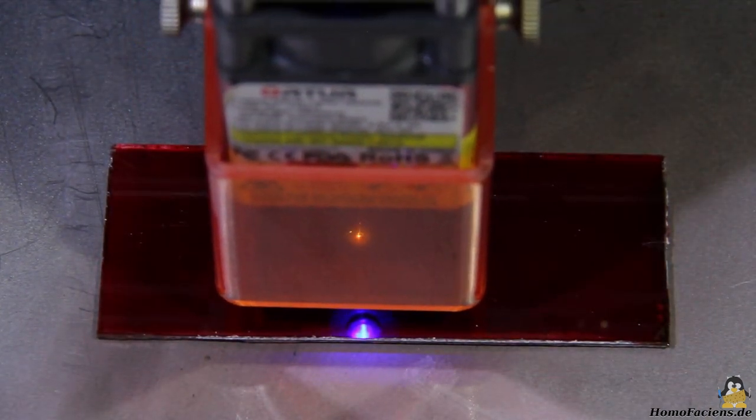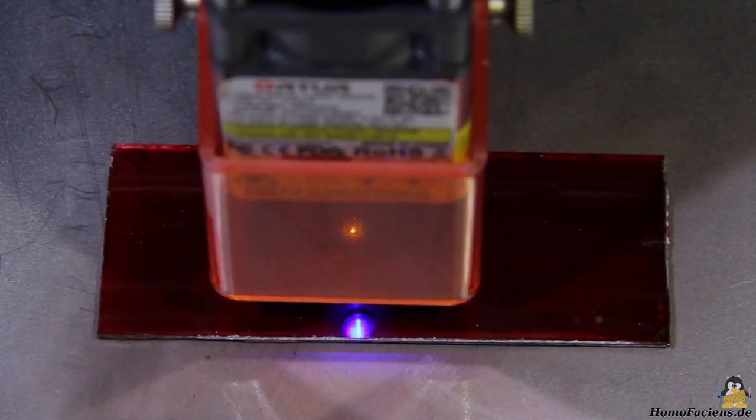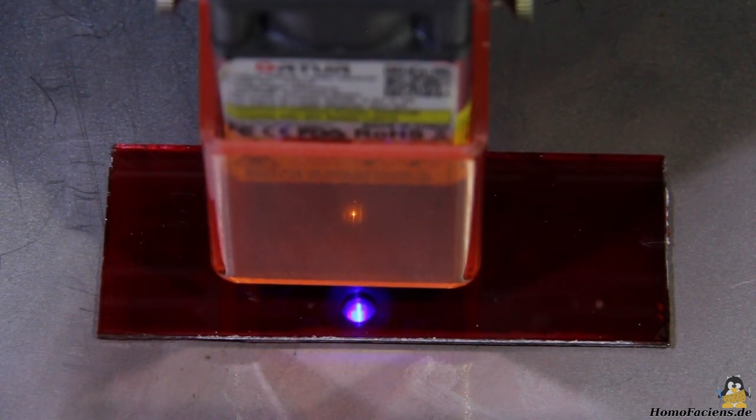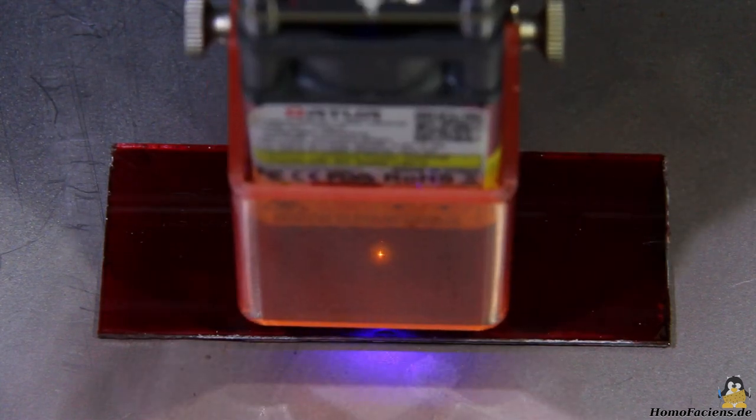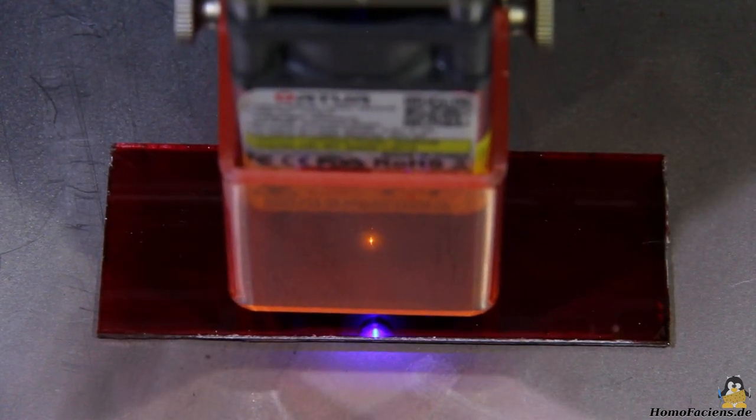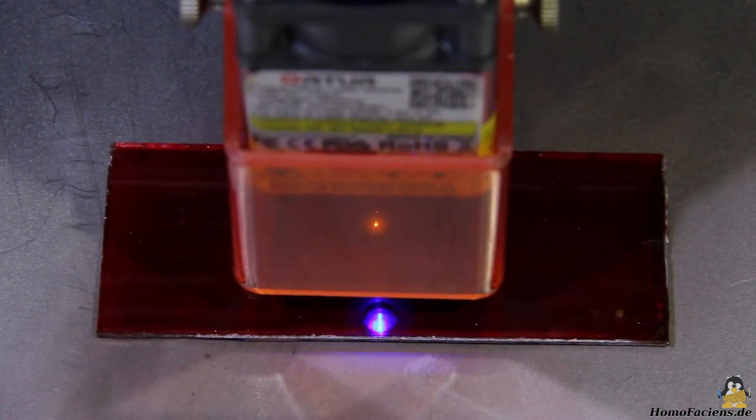If a material cannot be vaporized directly, a bit of paint can help. In order to prevent the laser from penetrating the transparent plastic with almost no effect, a layer of paint is applied to the surface.